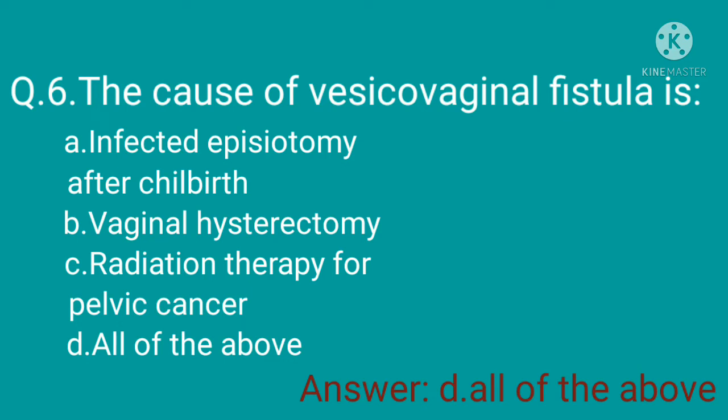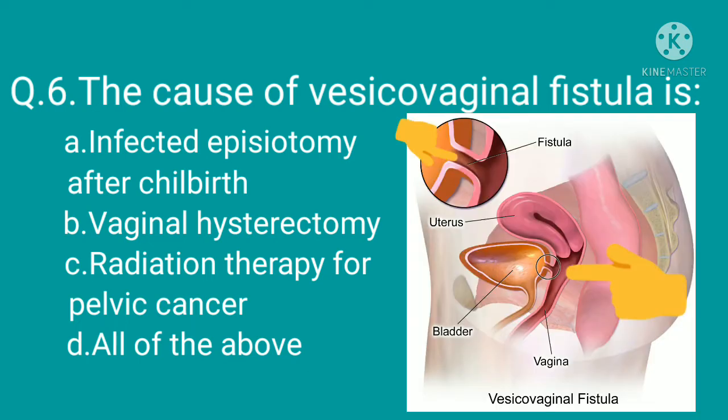A vesicovaginal fistula is an abnormal opening that forms between the bladder and the wall of the vagina. A diagram showing the vesicovaginal fistula is provided here.